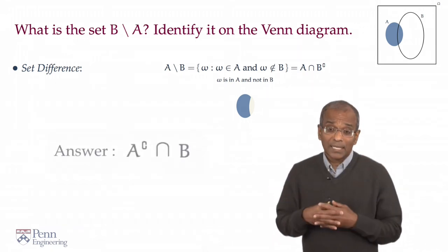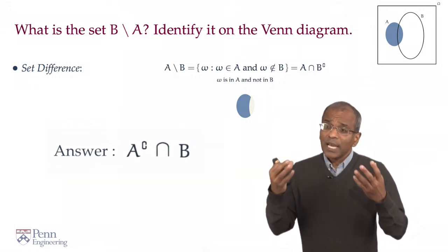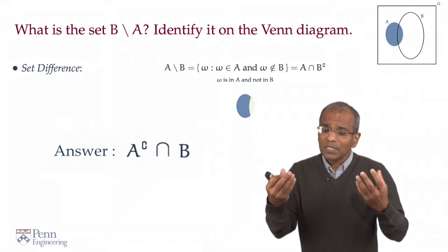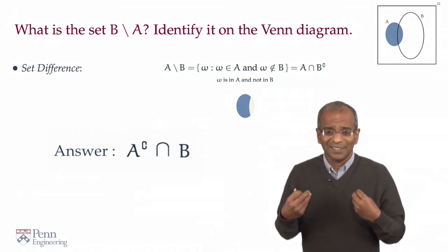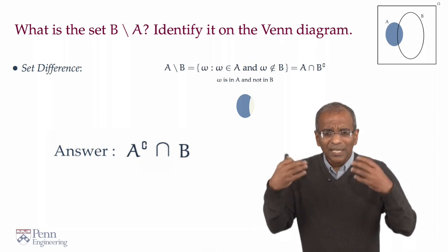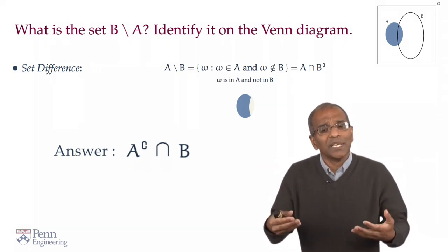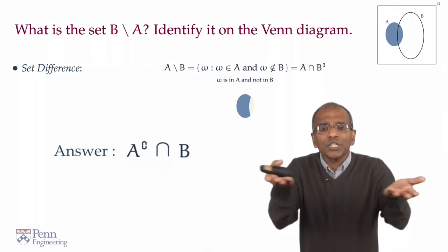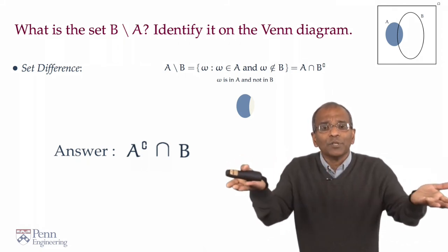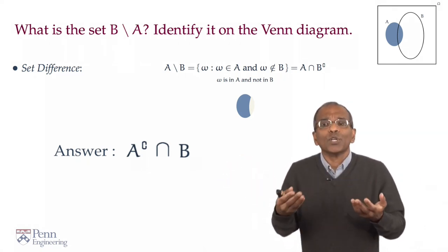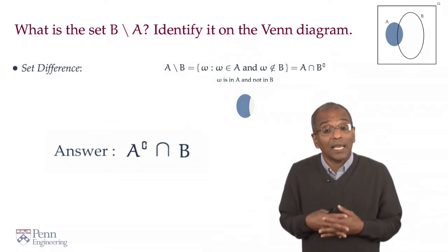Now, when you come back, did you get A complement intersection B? And, of course, you realize you can get this by simply interchanging the roles of A and B on the definition or the equation I have given you. If you just swap the orders of A and B, you get exactly B minus A.